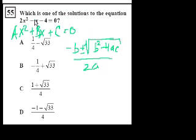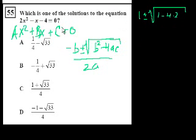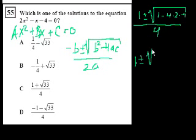And so let's substitute it in. What is b? b is minus 1, right? So minus minus 1, that's a positive 1. Plus or minus the square root of b squared, minus 1 squared is 1, minus 4 times a, a is 2, times 2, times c. c is minus 4. So times minus 4. All of that over 2a. a is 2, so 2 times a is 4.